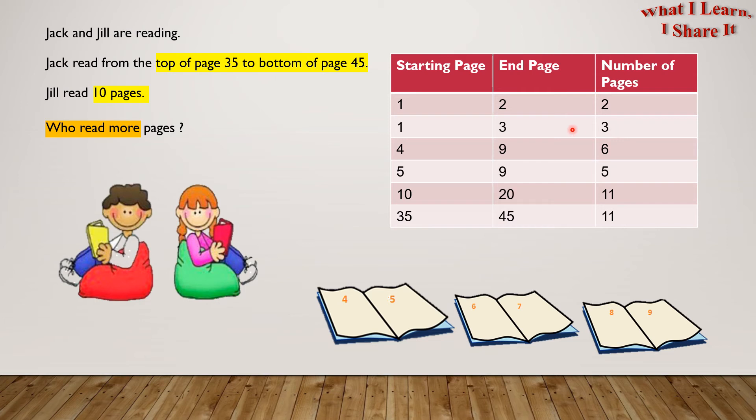In short, we have to add 1 more to the difference of pages. So if my start page is 10 and the end page is 20, the number of pages read equals 20 minus 10 plus 1, which is 11. In the same way, from page 35 to page 45, total number of pages equals 11.